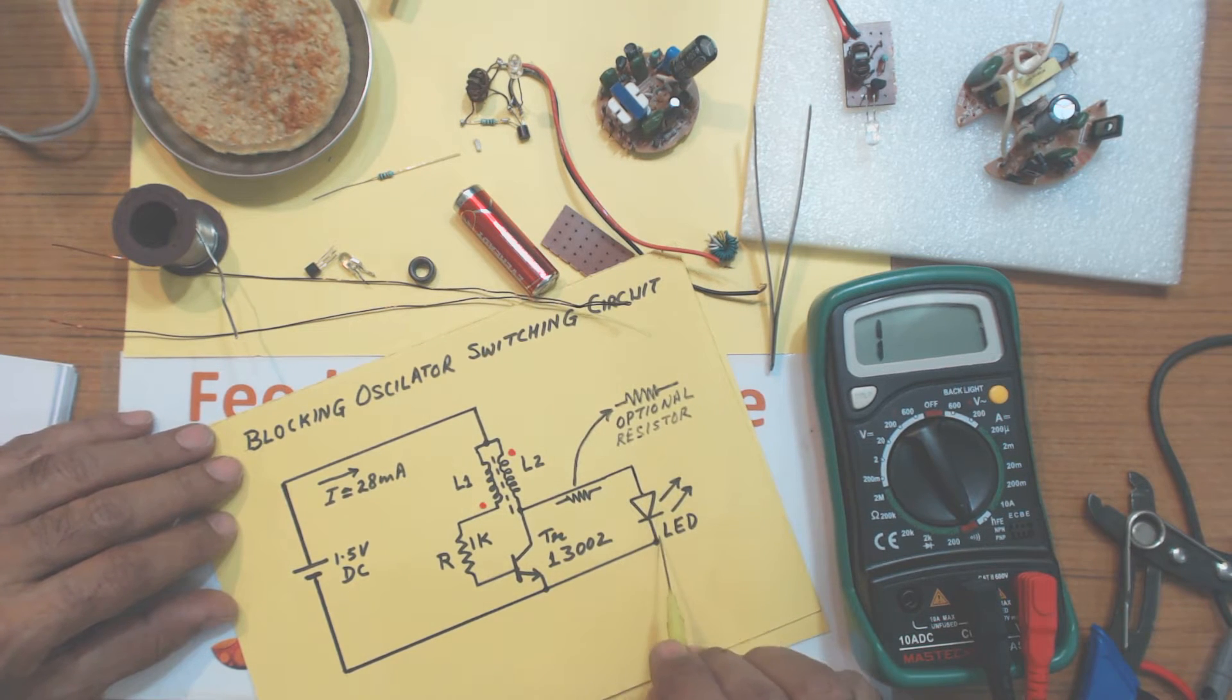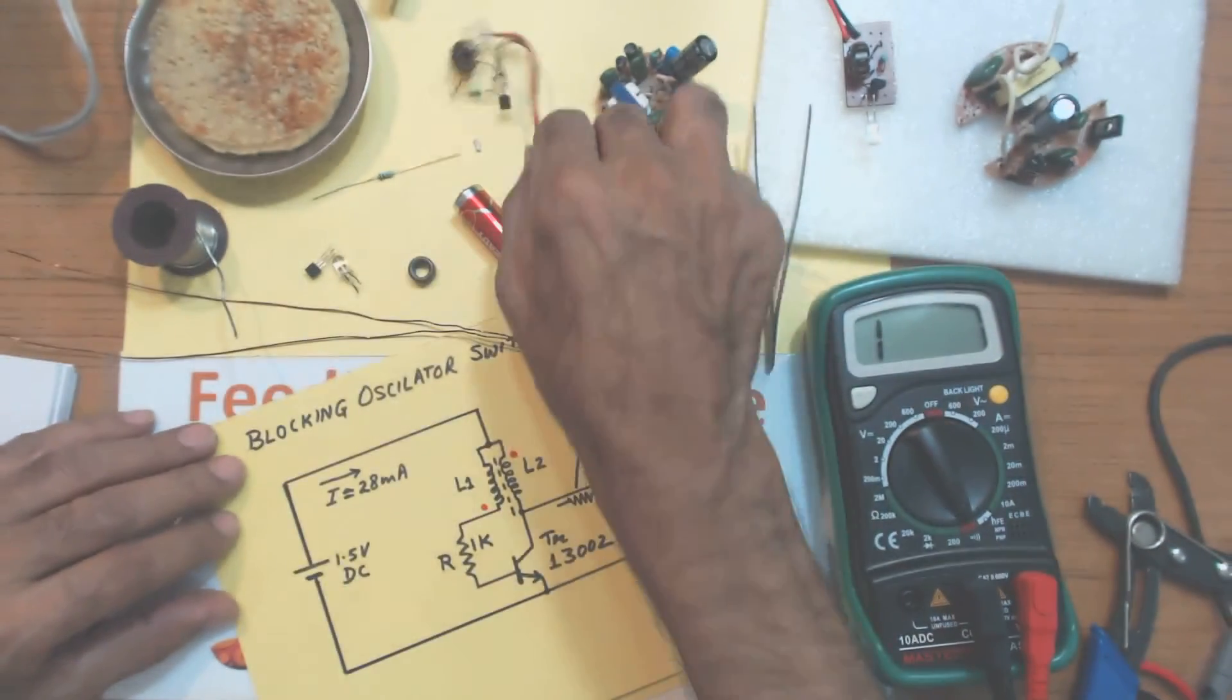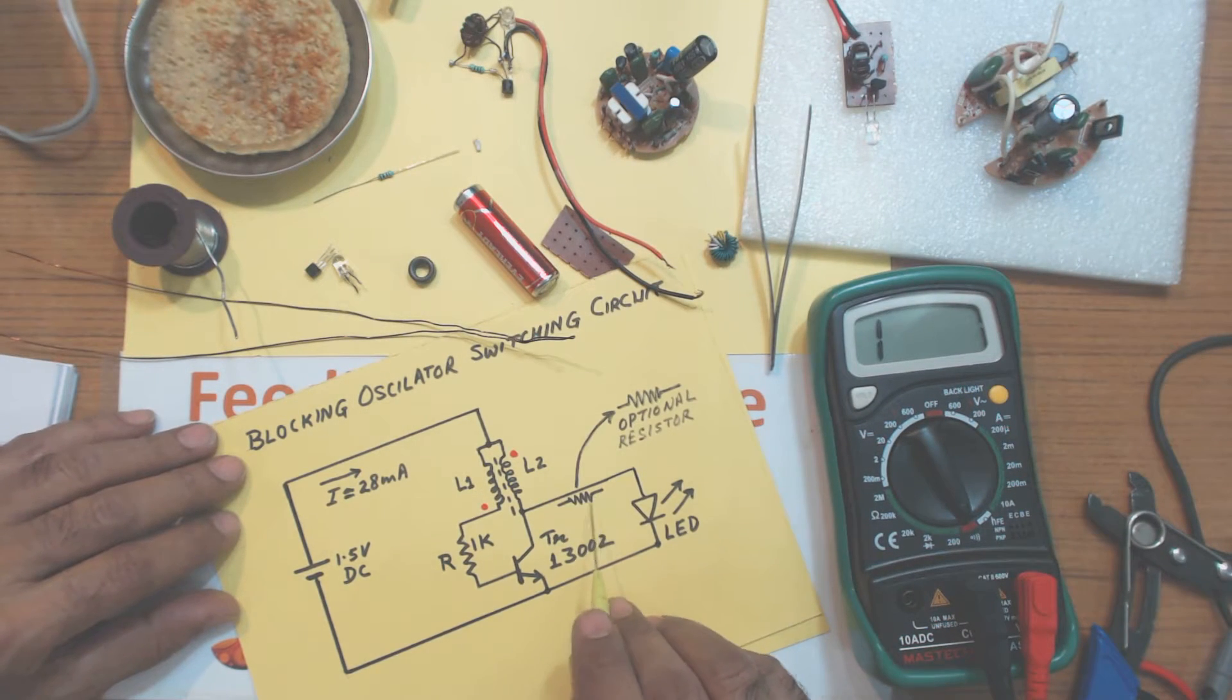LED is connected here which you want to light up. This you will have to purchase. And you can put an optional resistance here, low value resistance for limiting the current through the LED. But in the circuit which I have built, I am not using this resistor. So, the LED lights up to full brightness. This is optional.